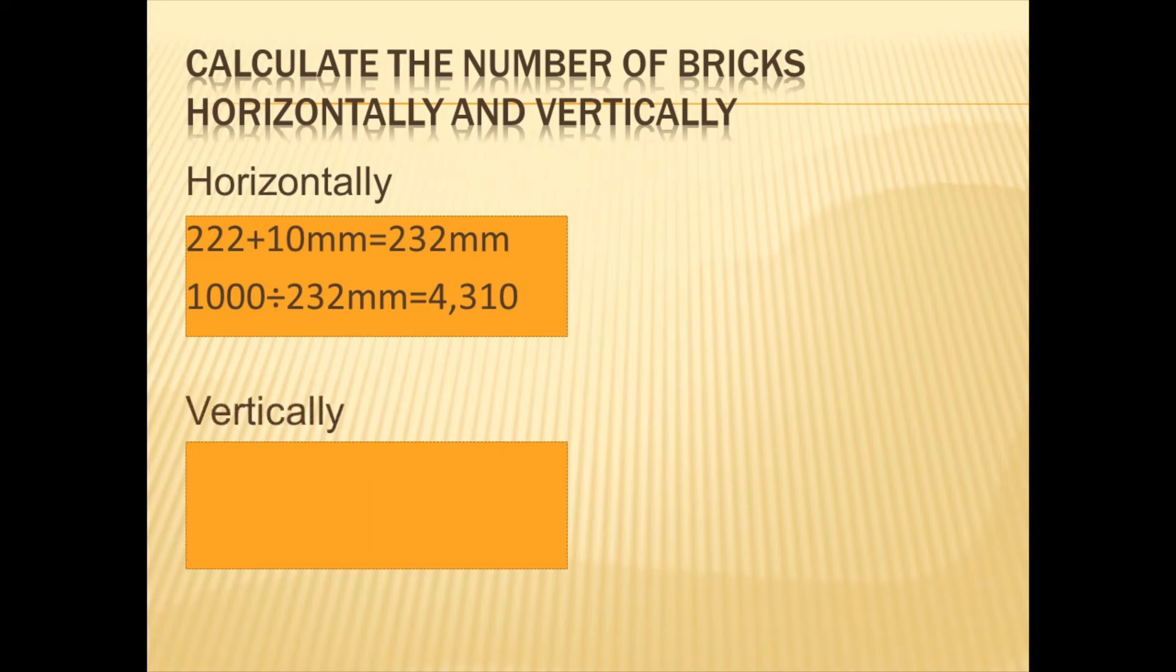Moving on to the vertical side, we will take our 73 millimeters, add 10 millimeters to it, which will give us 83 millimeters. And then we'll see 1000 divided by 83 millimeters, which is equal to 12.048.